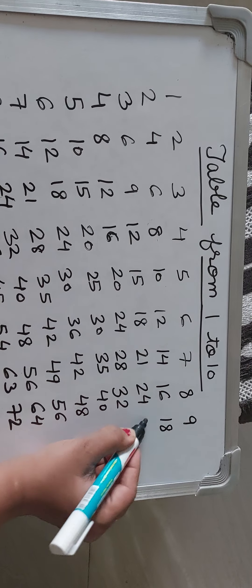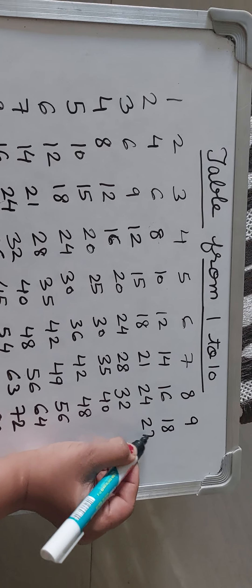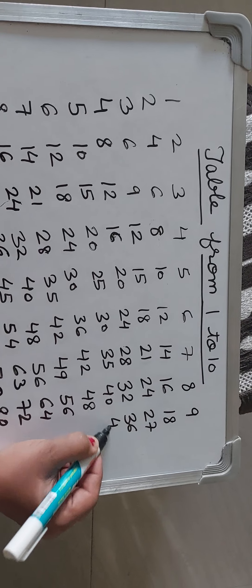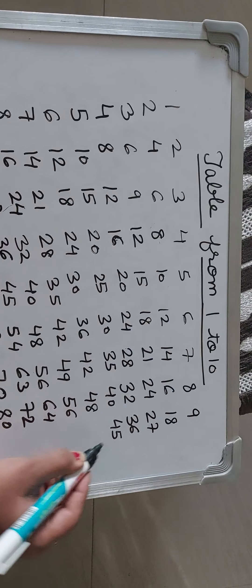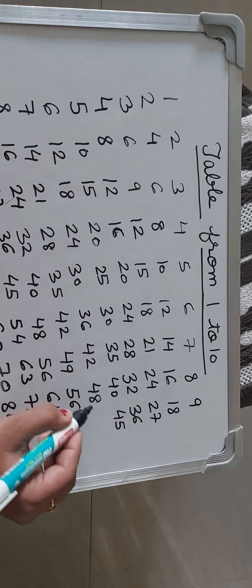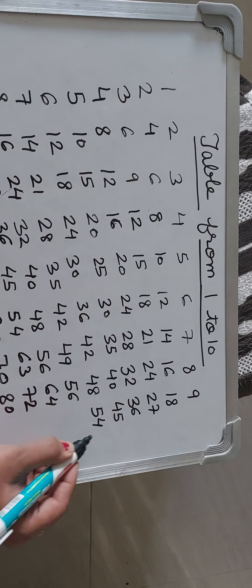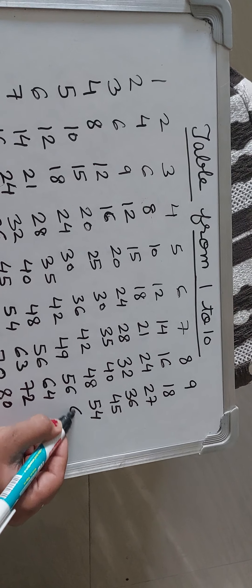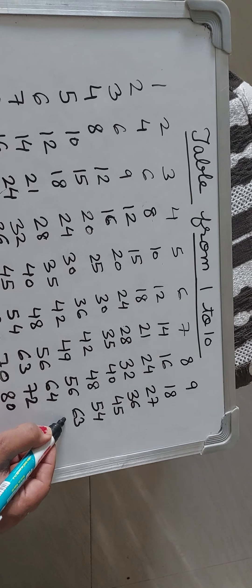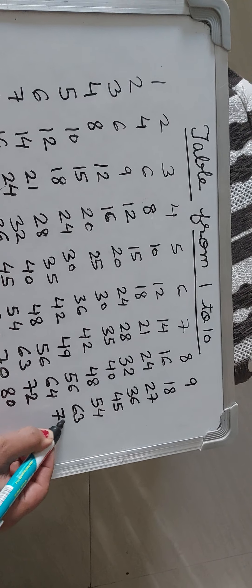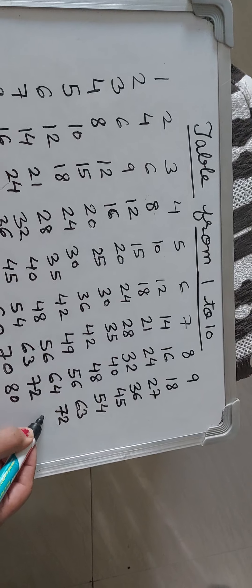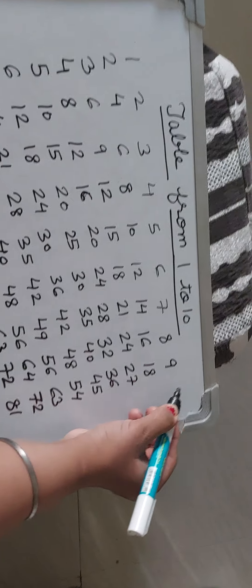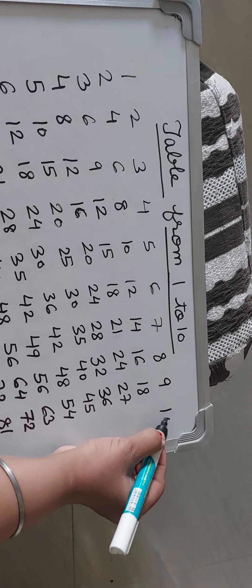Table of 9. 9 1s are 9, 9 2s are 18, 9 3s are 27, 9 4s are 36, 9 5s are 45, 9 6s are 54, 9 7s are 63, 9 8s are 72, 9 9s are 81, 9 10s are 90.